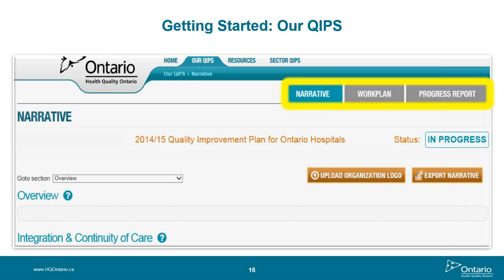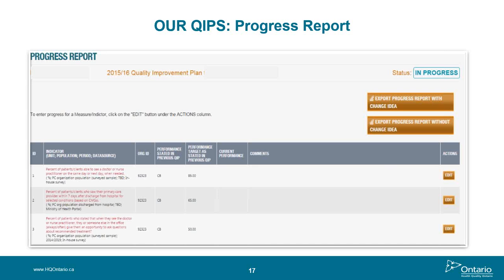Every year as part of the QIP submission process, healthcare organizations submit a report on their progress against the previous fiscal year's QIP priorities and targets. The Progress Report will be pre-populated with your previous QIP information. In February, there will be a data refresh and HQO will pre-populate the current performance where available. You'll be expected to fill in the comments section and only the current performance where it is unavailable, by clicking the Edit button on the right-hand side of the screen.